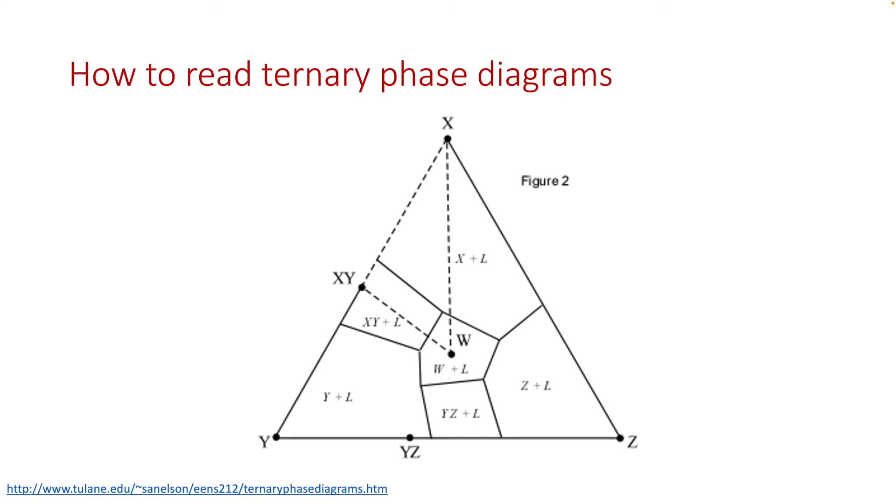This is pretty straightforward. If we use the composition at W as an example, at this temperature, there are two phases present, that's W and L. If the composition lies somewhere in the bottom right corner, like here, then the phases will be Z and L.